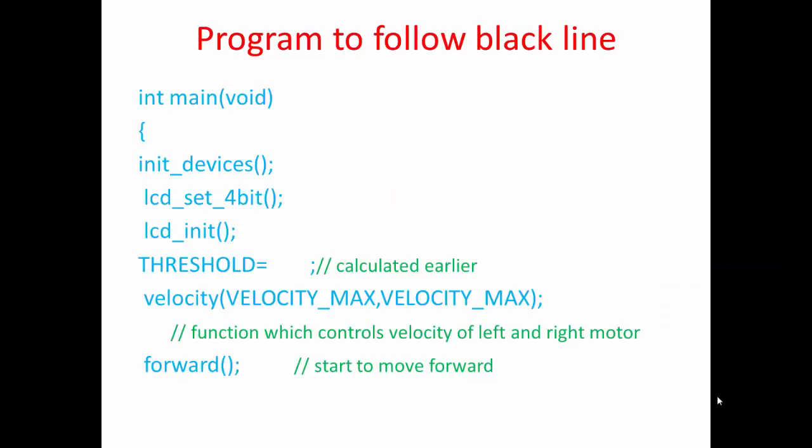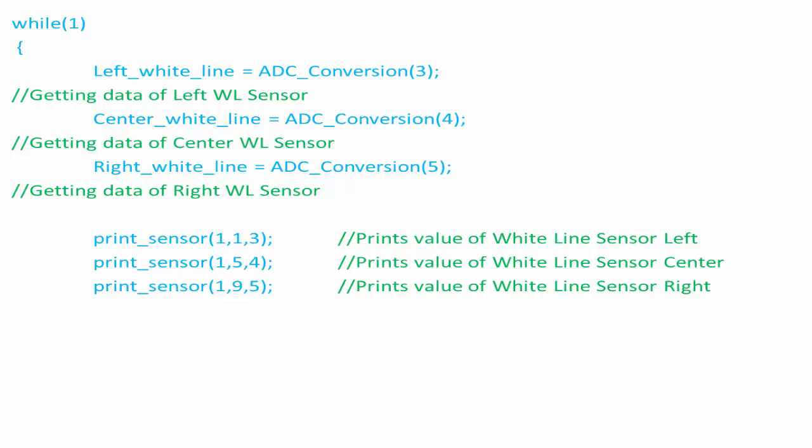Let us start with the programming now. The main function starts with initialization by calling various functions. A variable threshold is fed with the value calculated earlier. The velocity function is used to set the velocity of individual wheels. Anything written inside a while loop runs continuously. The following statements are written in a while loop. The variables left white line, center white line, and right white line are fed with their respective ADC converted values and printed on the LCD.